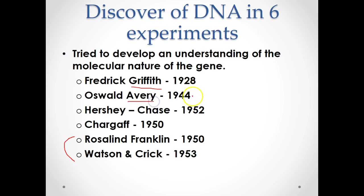Oswald Avery came about 20 years later and extended Griffith's experimentation one step further. Griffith had said there was a factor — he didn't know if it was protein or nucleic acid — but he knew one of those things was instrumental in making bacteria pathogenic. Avery determined that it was in fact DNA, and not protein, that caused bacteria to be pathogenic.